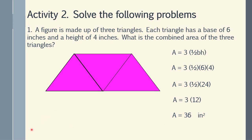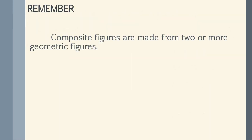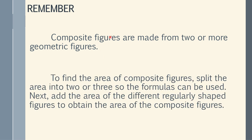Remember, composite figures are made up of 2 or more geometric figures. To find the area of composite figures, split the figure into 2 or 3 parts so the formulas can be used. Then just add the area of the different regularly shaped figures to obtain the area of the composite figure. Thank you for watching.